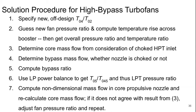So we guess a new fan pressure ratio and then compute the temperature rise across the booster, and then we get the overall pressure ratio and temperature ratio for the engine. We can then determine the core mass flow from consideration of the choked high pressure turbine inlet conditions. We can get the bypass mass flow and whether the nozzle is choked or not for the bypass. We can then compute the bypass ratio.